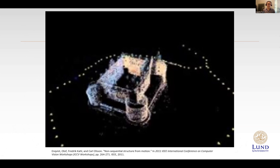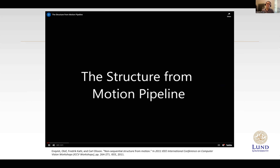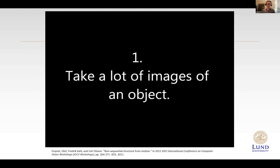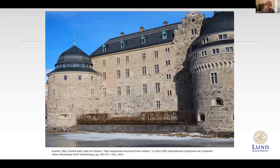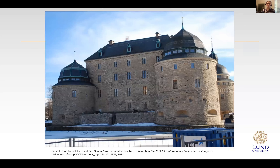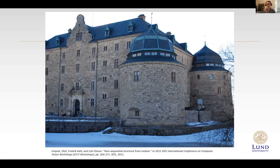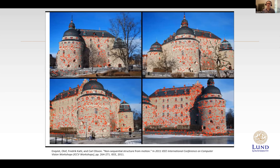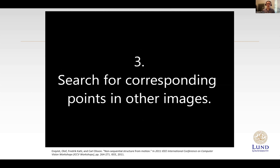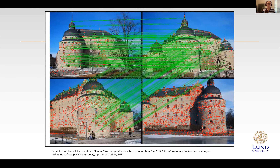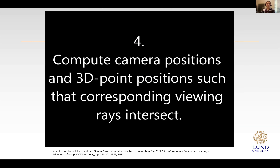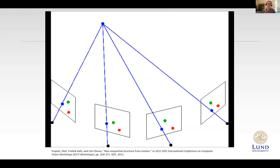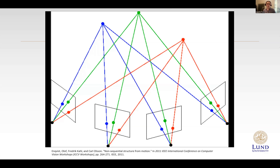You take many images of an object like a blue castle, covering every point more than once to enable triangulation. We identify points in images that may also appear in other images — typically corners or areas of gradient change. Then we search for correspondences between different images pairwise. Using these correspondences, we compute camera positions and 3D points — very similar to the ball example but for more than two images.